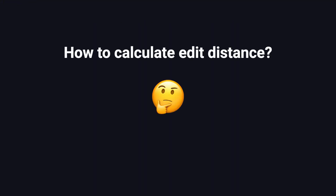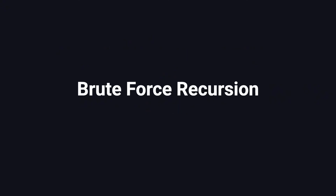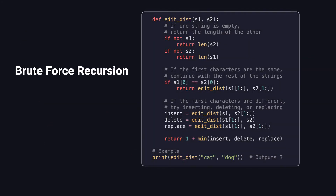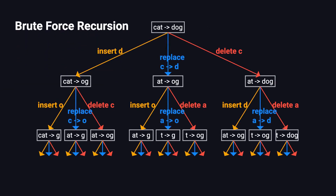Now the question is, how do we actually compute the edit distance between two strings? One approach you might think of is brute force recursion — that means we try every possible combination of edits and choose the one with the fewest steps. The performance is terrible because at every character we have three choices, and each of those choices creates more branches. As the strings get longer, the number of possible paths grows exponentially. That's a lot of redundant work.